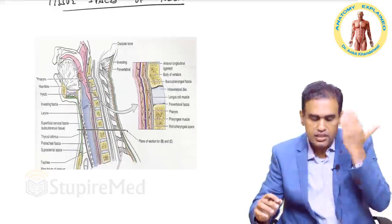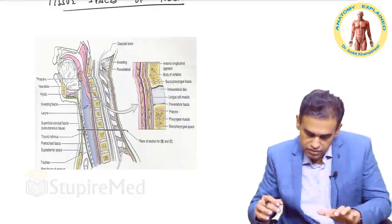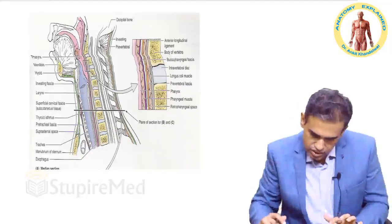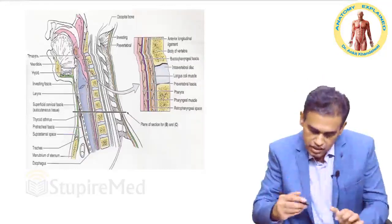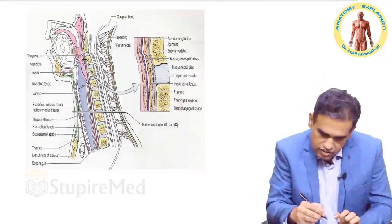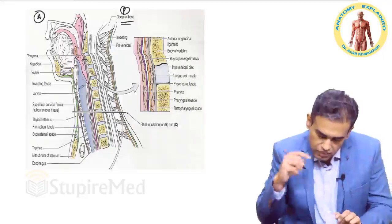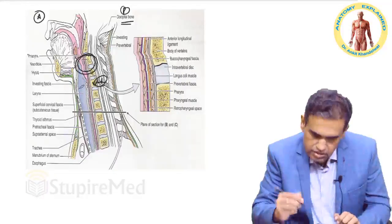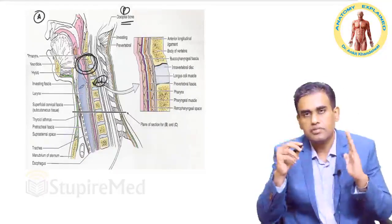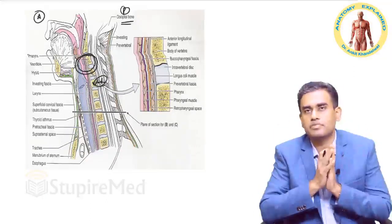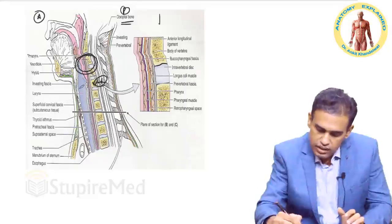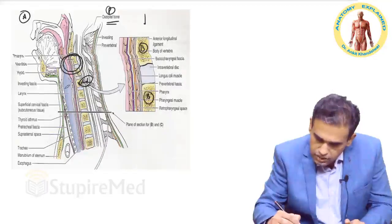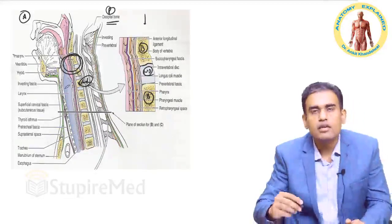In this figure, a sagittal view of the neck is shown with a few spaces. In the zoomed figure, this is the anterior part and this is the posterior part. You can see the occipital area and the vertebrae. In front of the vertebrae is the area behind the pharynx and in front of the prevertebral muscles. This shows the body of vertebrae and in between you have the intervertebral discs.